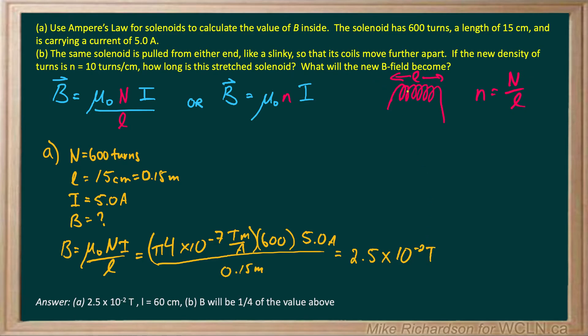Remember, solenoids are basically electromagnets. We're calculating where all that magnetic field is concentrated. Imagine field lines going around on the outside, through the center - they're all concentrated in the middle. That's where we're figuring out the value of the magnetic field.